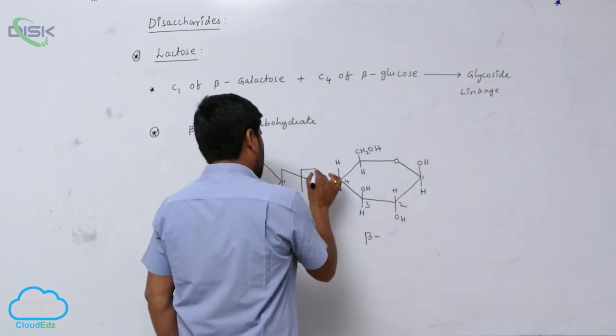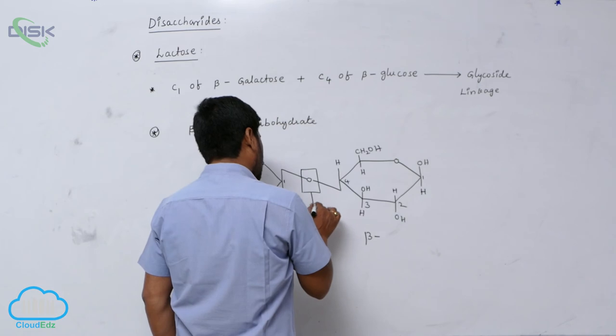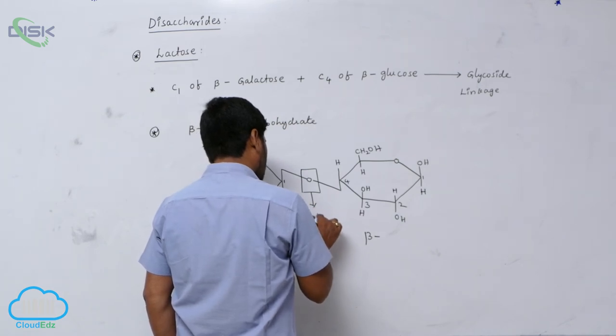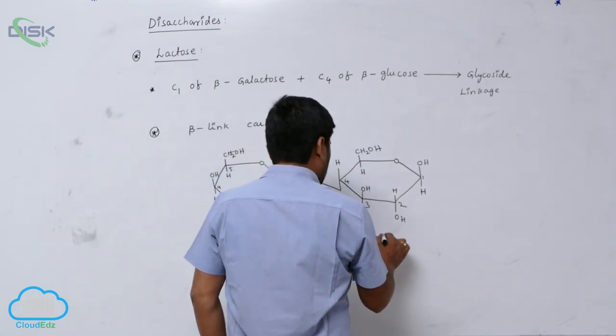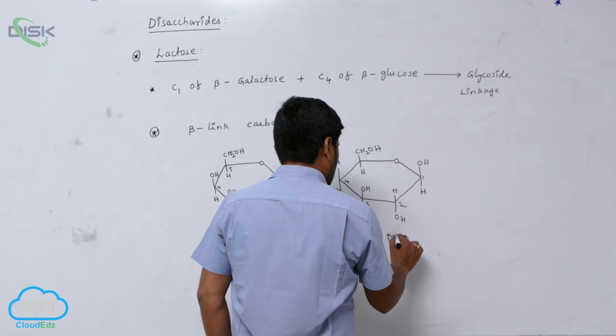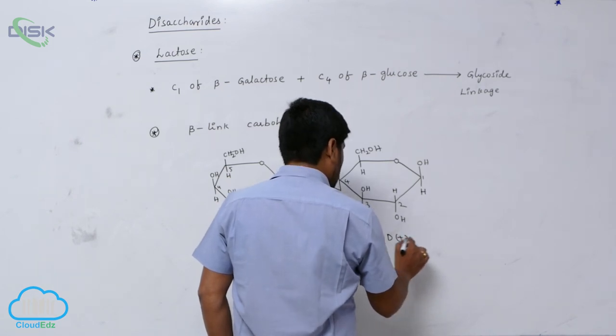It is which linkage? Beta-link. Beta-link, D-plus fructose, sorry, glucose.